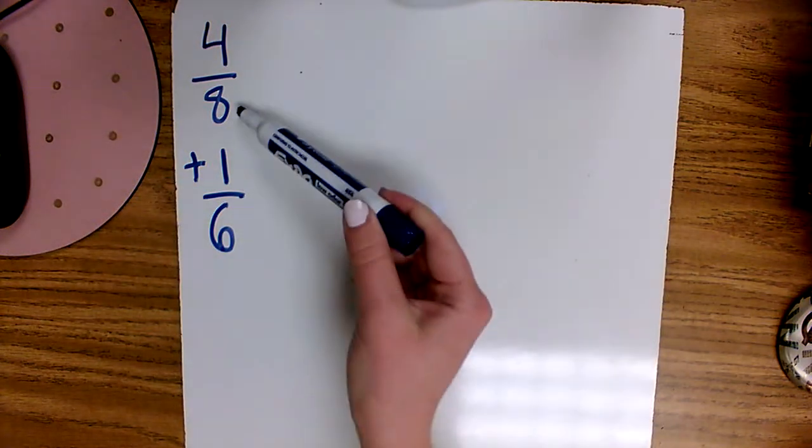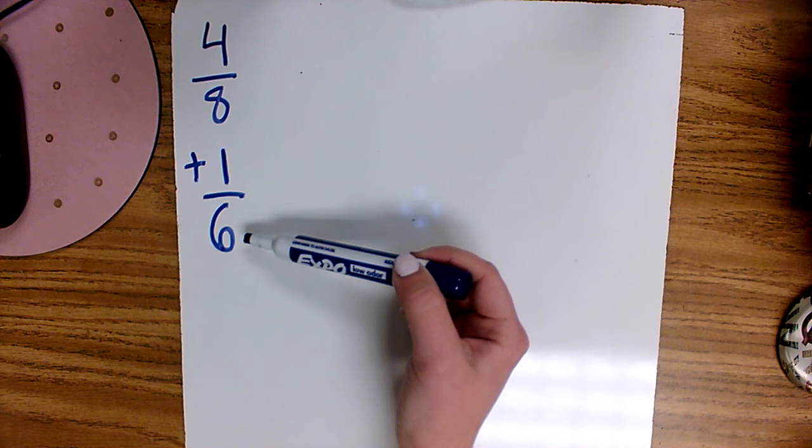Hello! Our class has started adding and subtracting fractions with unlike denominators, denominators that are different. To do this we learned that we need to find a common denominator and our students have learned two strategies in order to do this. I'm going to show you both of those now.